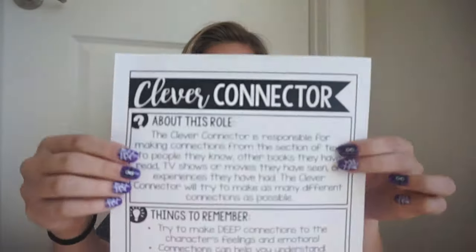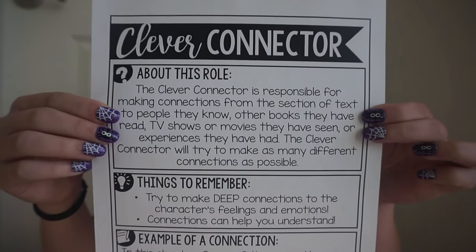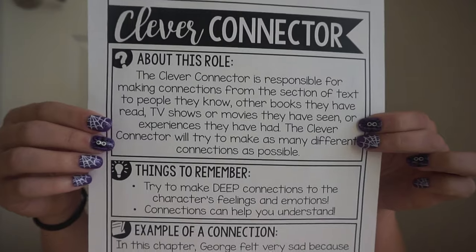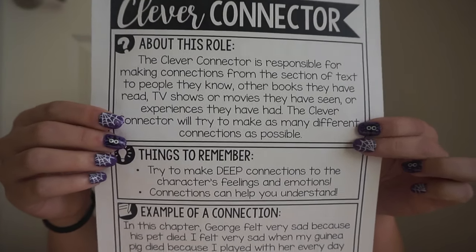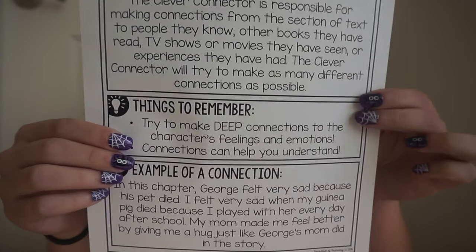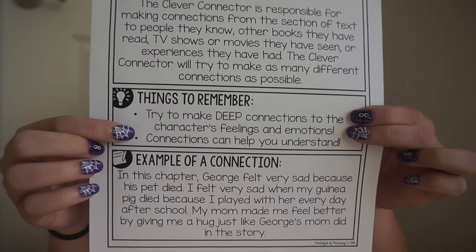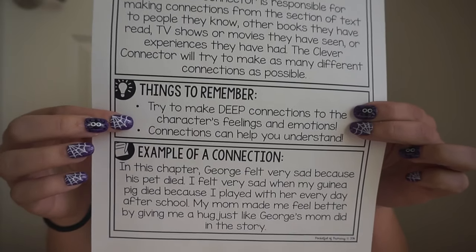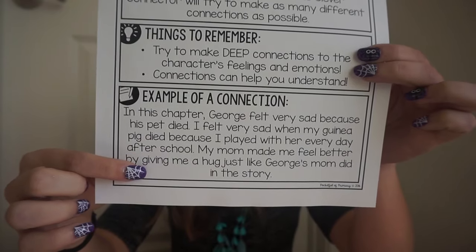The clever connector is responsible for making connections from the text to people they know, other books they've read, TV shows or movies they've seen, or experiences they've had. Things to remember: the connections need to be deep, so making connections to the characters' feelings or emotions. An example connection is included at the bottom of that page.